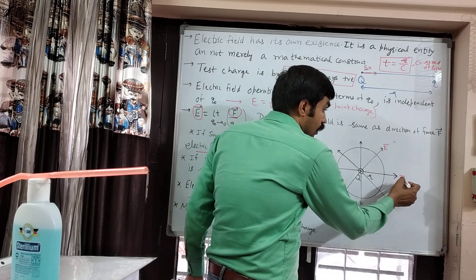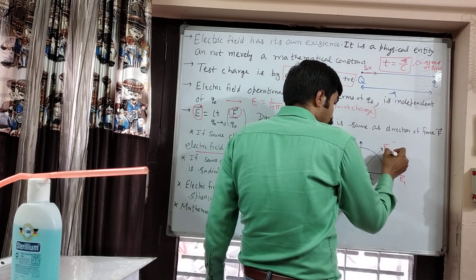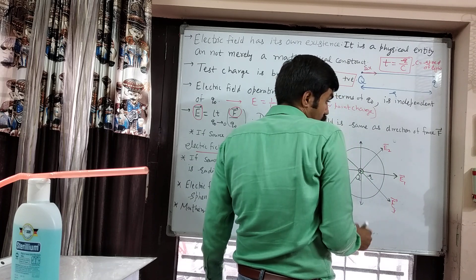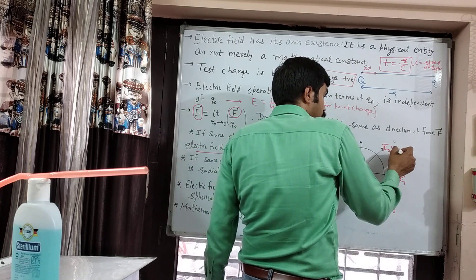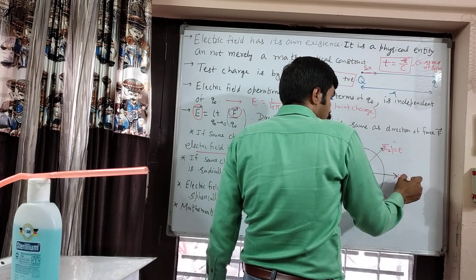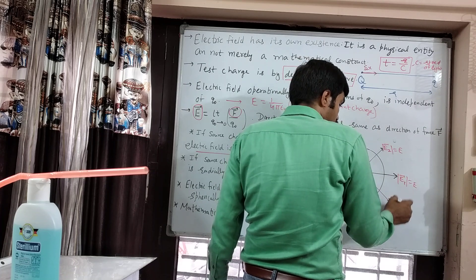At different points we have E₁ vector, E₂ vector, and E₃ vector. But their magnitudes are the same.